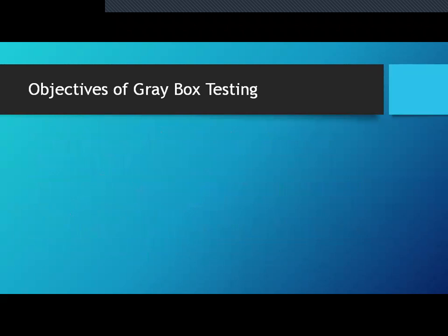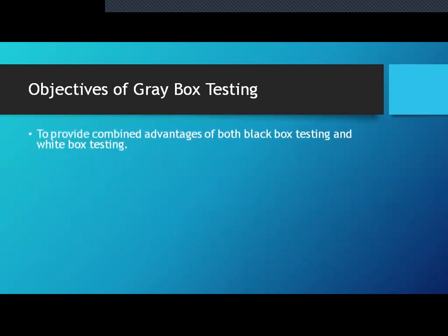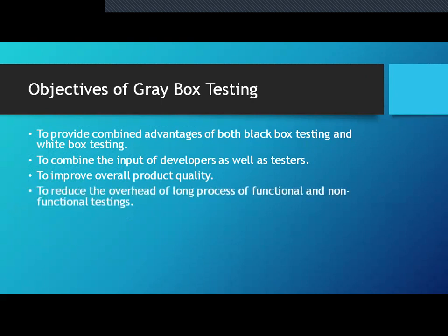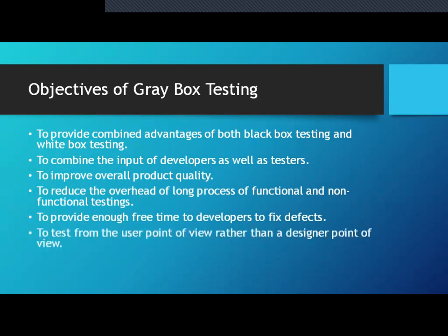You might also be asked why one should go for gray box testing — what is the significance, what are the objectives of gray box testing? It is basically done to provide the combined advantage of both black box as well as white box testing. It is done to combine the input of both developers as well as testers. It would also help to improve the overall product quality. Then it is done to reduce the overhead of long process of functional as well as non-functional testing. The developers will get enough time to fix the defects, and it is done from a user point of view rather than the designer point of view.